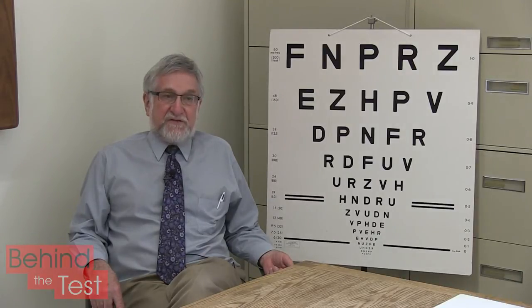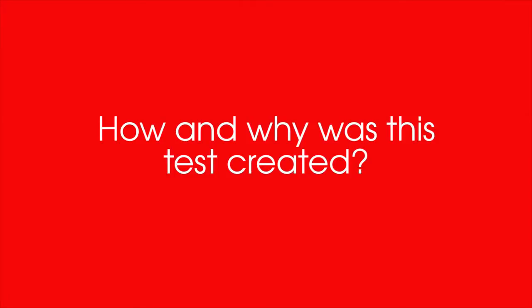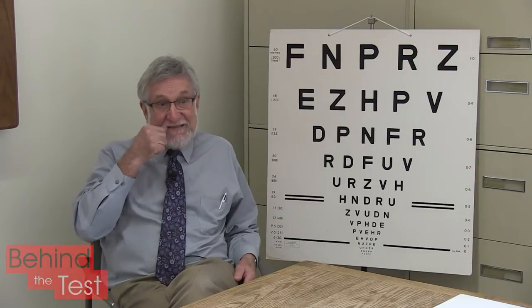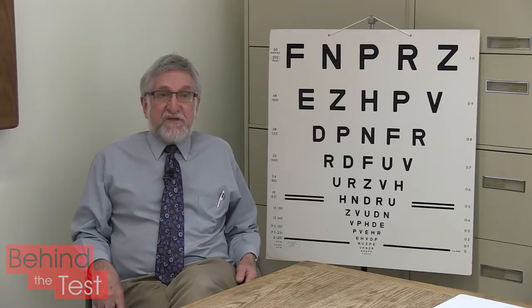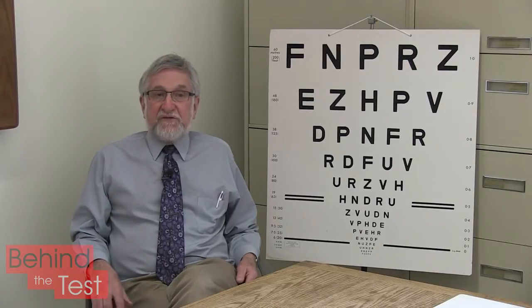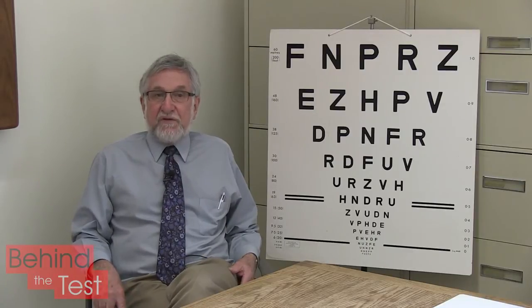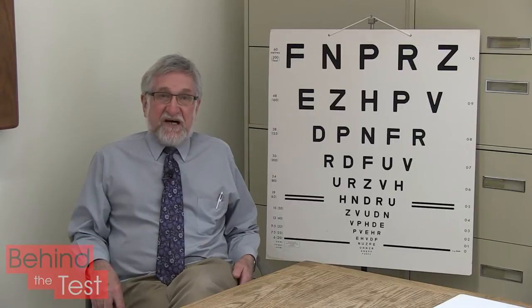The Bailey-Lovie charts are used in virtually all major research studies where visual acuity is one of the important outcome measures. We developed the chart because of research. About 40 years ago, Jan Lovie-Kitchin and I — she was then just Jan Lovie — started working together on a project looking at vision in people with macular degeneration. Most of these people had very poor visual acuity, and the charts available in those days were not suitable for measuring visual acuity when people's vision was poor. So we said we need to design charts that are different, that give us more letters at the larger sizes.